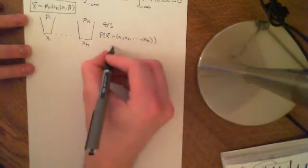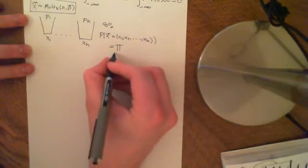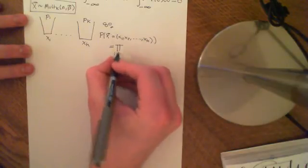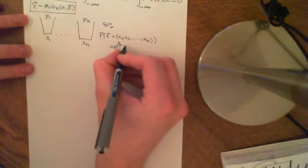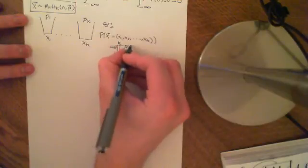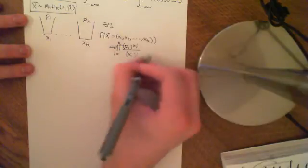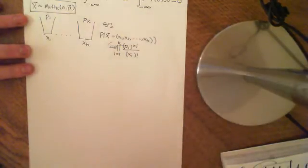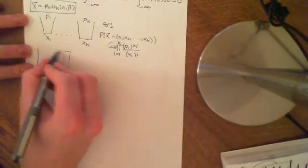The problem is then to find the probability that this vector x equals some specific vector x1, x2, ..., xk. We know that is given by the probability mass function, which is n factorial at the front, times the product from i=1 to k of pi to the power of xi over xi factorial. Basically, we have this probability space, which is every possible outcome of ascribing these n balls into these baskets.